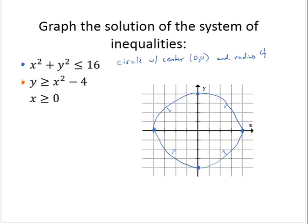So second, I have y is greater than or equal to x squared minus 4. So I recognize that as a parabola opening up and vertex at 0, negative 4.